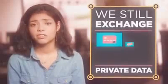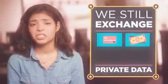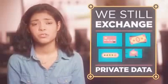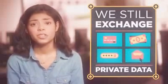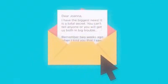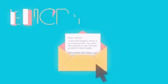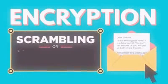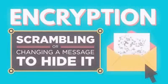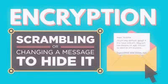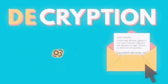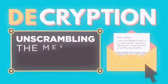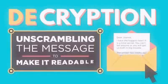Things like credit card numbers, bank information, passwords, and emails. So how is all this private stuff kept secret? Data of any kind can be kept secret through a process known as encryption, the scrambling or changing of the message to hide the original text. Decryption is the process of unscrambling that message to make it readable.